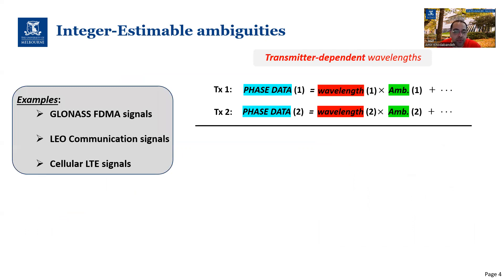However, next to CDMA signals, we also have other types of signals, such as GLONASS frequency division multiple access signals, LEO communication signals, or even cellular LTE signals, whose carrier frequencies or wavelengths are transmitter-dependent, meaning that they are different for different transmitters.